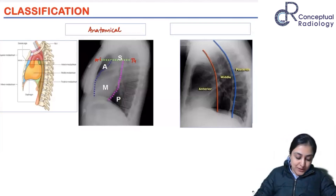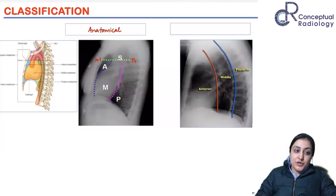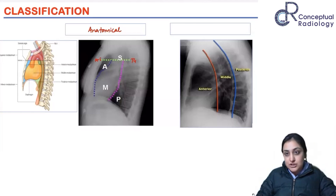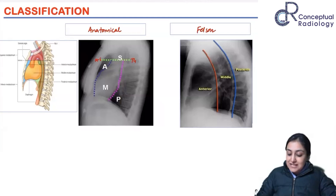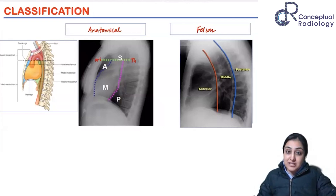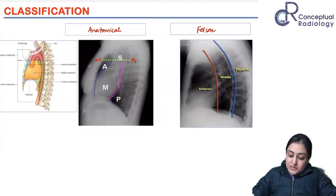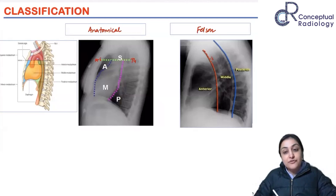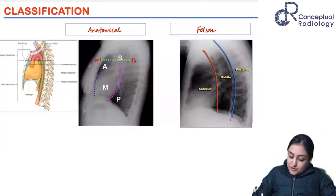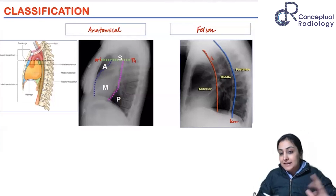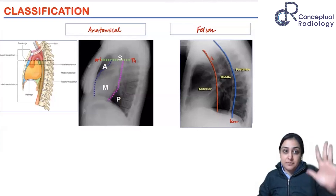In the anatomical classification schematic, anything in blue — the retrosternal space — is the anterior mediastinum, then the middle, and behind it the aorta and paravertebral space is the posterior mediastinum. The Felson classification includes the heart in the anterior compartment. Its boundaries are: the first line runs along the anterior margin of the trachea and posterior margin of the heart; the second line runs one centimeter behind every vertebral body.